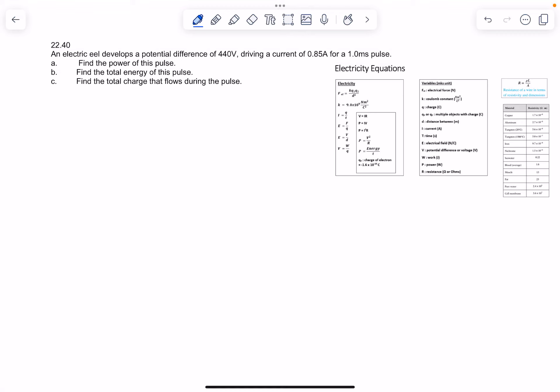Power of this pulse—we've got this electric eel, that's pretty cool by the way. 450 volts, amps, we've got time, and it gets a pulse. All right, so find the power of this pulse.